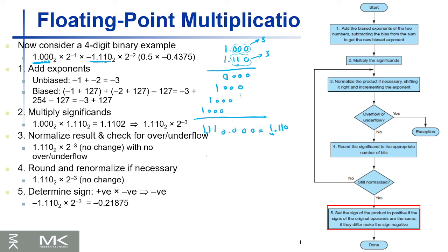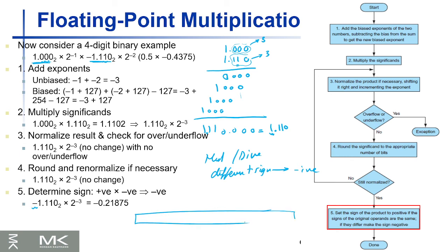In multiplication and division, if the two operands have different signs, the output is always negative. So we add a minus sign here. The final result stored in a single-precision register has: a 1 in the sign bit (because it's negative), then the exponent field holds minus three plus 127 which equals 124, and then the significand bits are 1.110 with the rest as zeros.